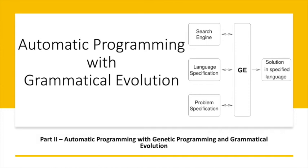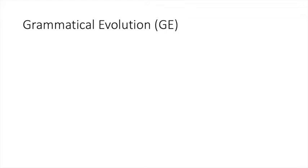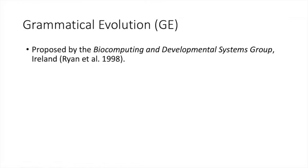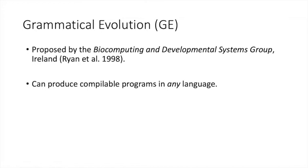First, a bit of background. Grammatical evolution, or GE, was proposed in 1998 by Ryan et al. at the Biocomputing and Developmental Systems group in Ireland. Unlike genetic programming as introduced in the last video, grammatical evolution or GE can generate computer programs in any programming language.